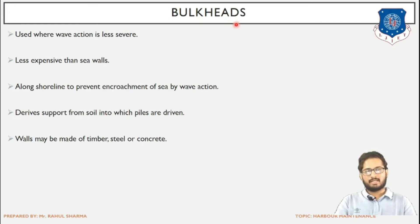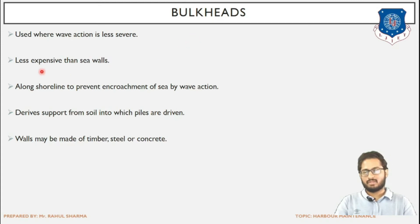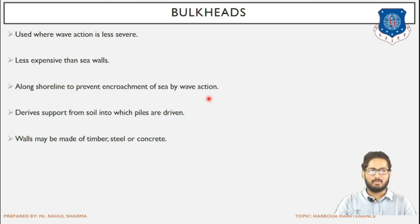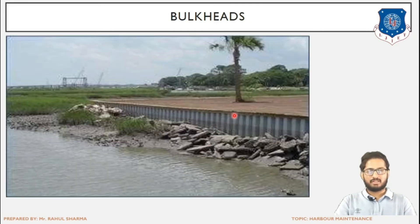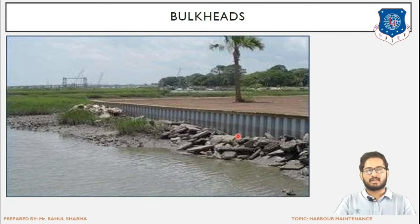Next are bulkheads. Bulkheads are used where wave action is less severe — sea walls are constructed where the wave action is severe, while bulkheads are constructed where the effect of waves is not that severe. Bulkheads are less expensive than sea walls. They are constructed along the shoreline to prevent the encroachment of the sea by wave action. This is a vertical structure — this is the bulkhead, with the land portion on one side and the water portion on the other.